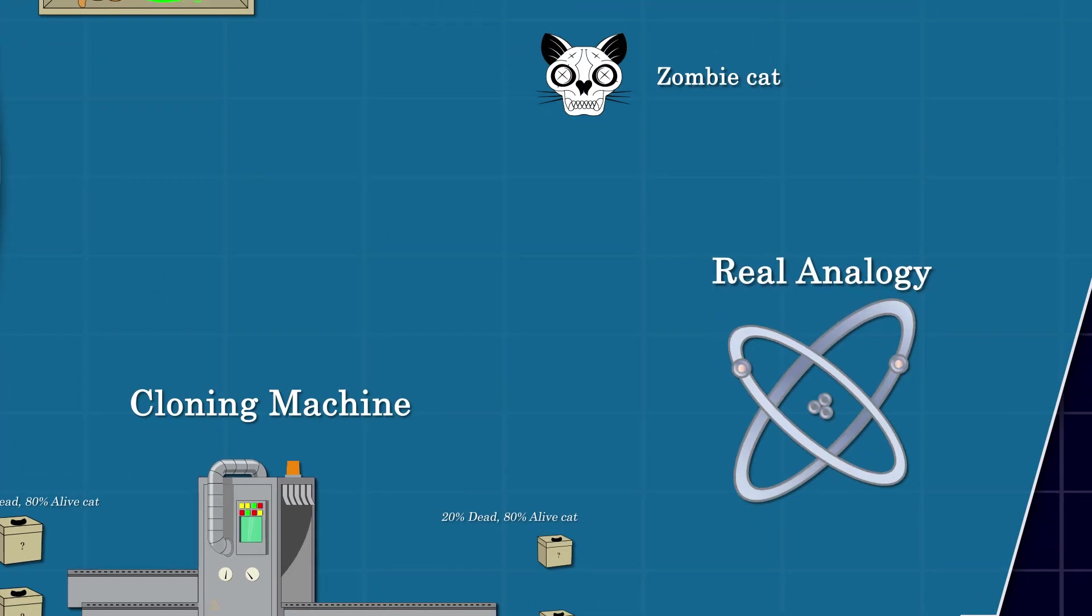Schrodinger's cat has a real experimental analogy. An atom's ground state can be considered a dead cat, while the excited state is an alive cat. Moreover, when we have the superposition of the ground and excited state, it's like having a zombie cat.